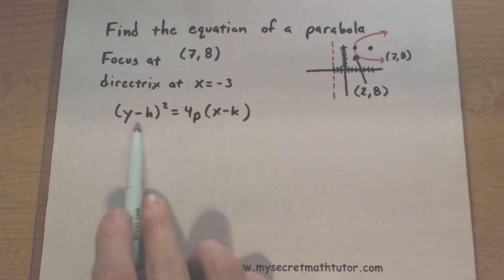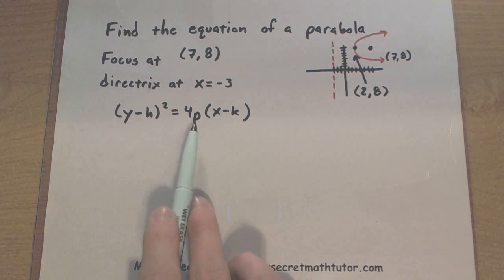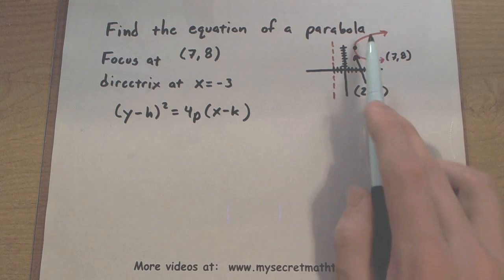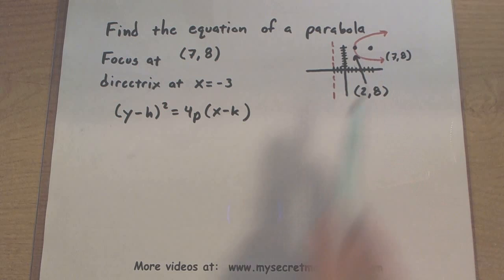The h and the k will represent my vertex, and the p value here is the distance between the vertex and the focal point.